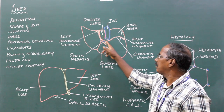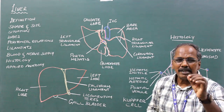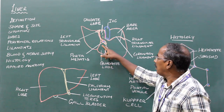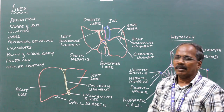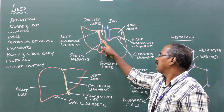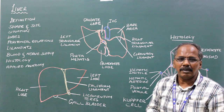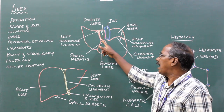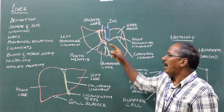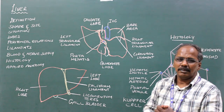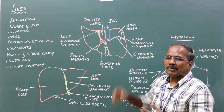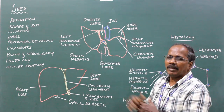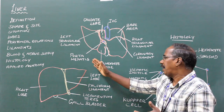Porta hepatis. It is a fissure or gap which is present between the caudate and the quadrate hepatic lobes. The porta hepatis consists of the hepatic artery, portal vein, and hepatic duct. The hepatic artery and portal vein enter the porta hepatis. The hepatic duct exits from the porta hepatis.